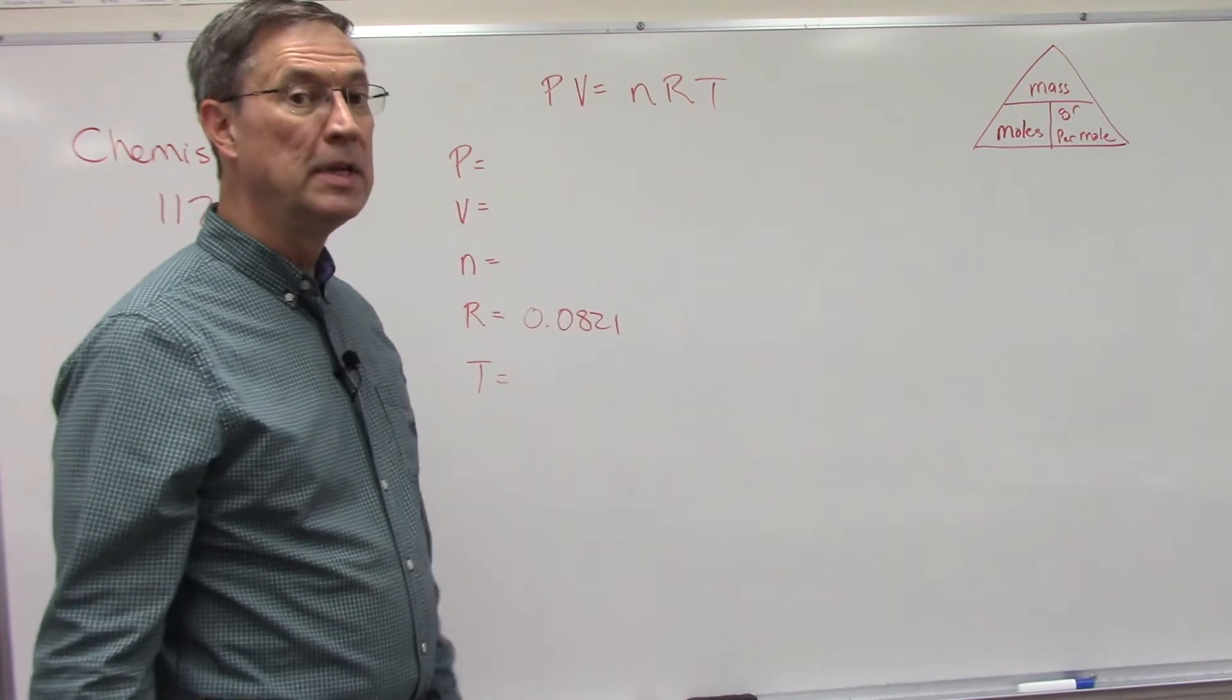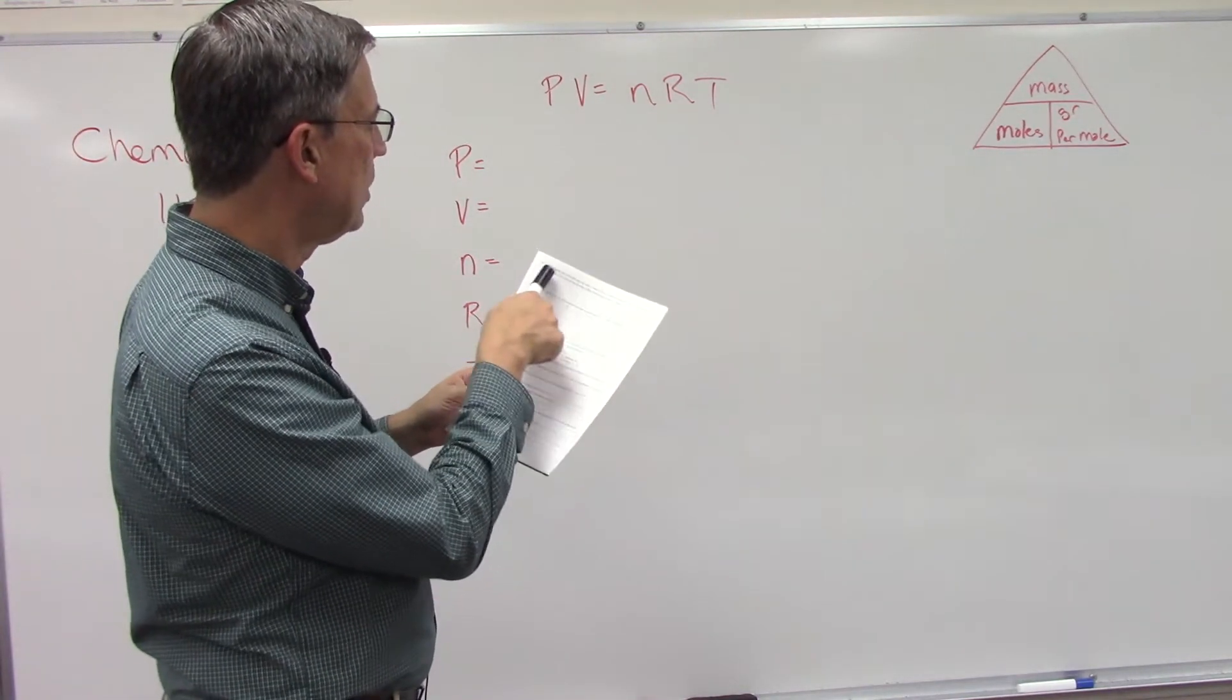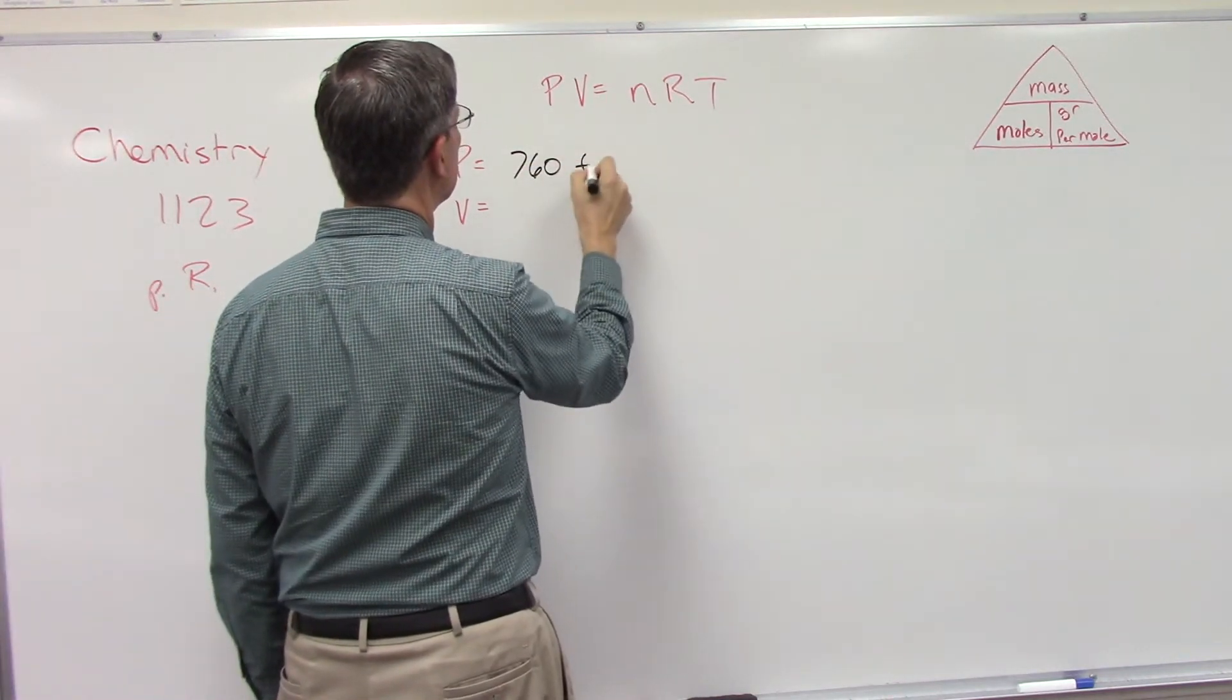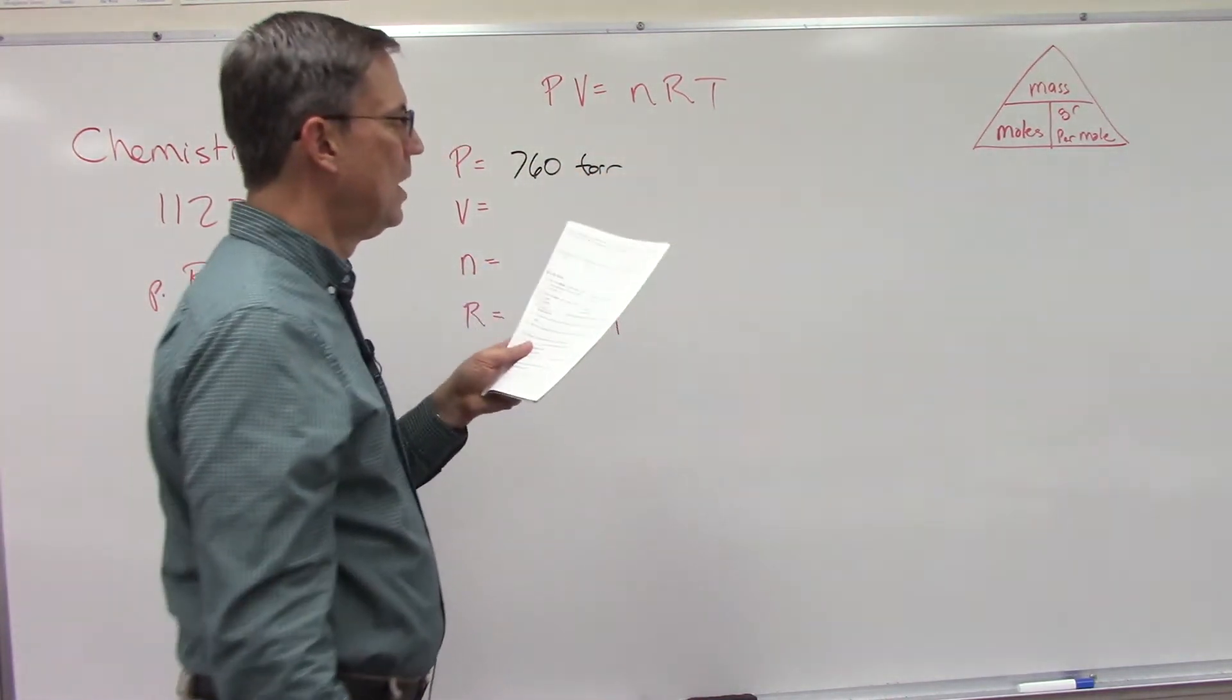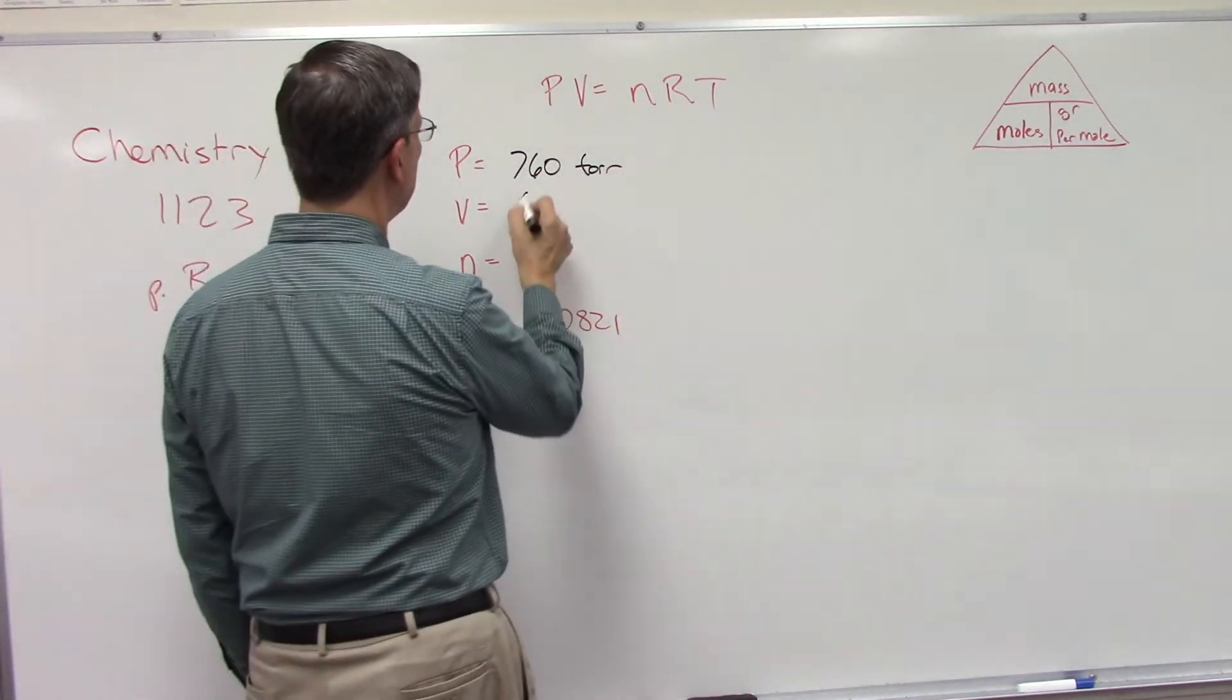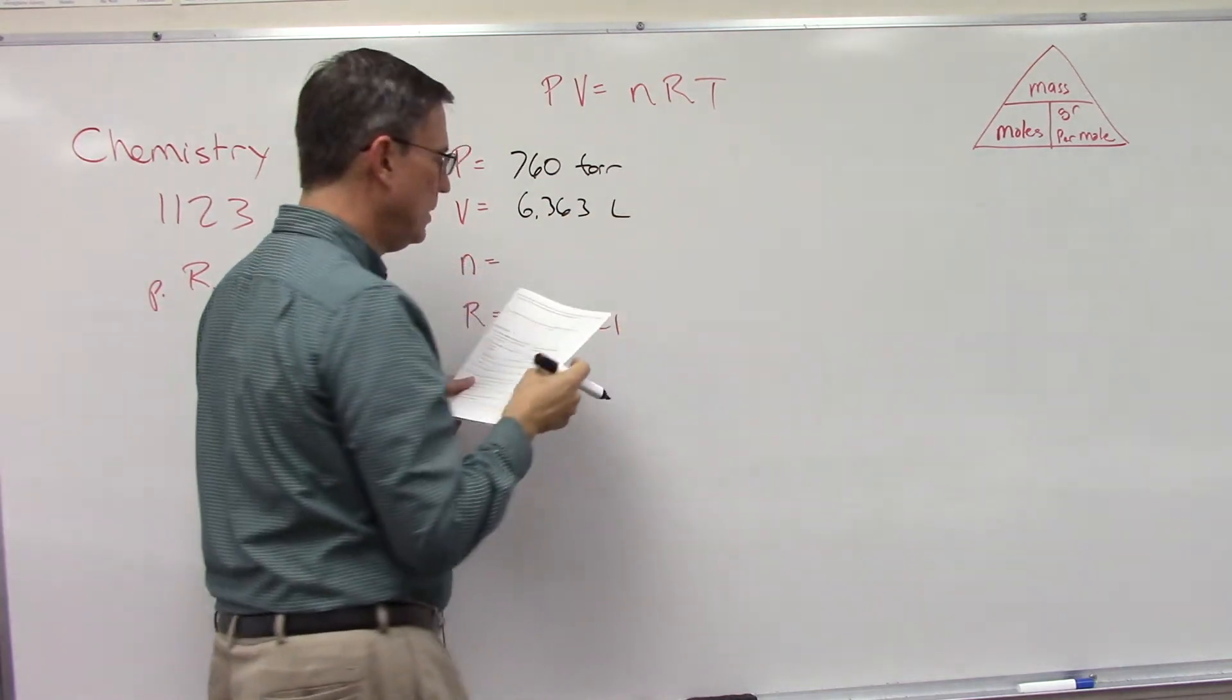...and see if we can find the pressure. I'm looking at it again—it has a pressure of 760 torr. It has a volume of 6.363, and that is in liters.